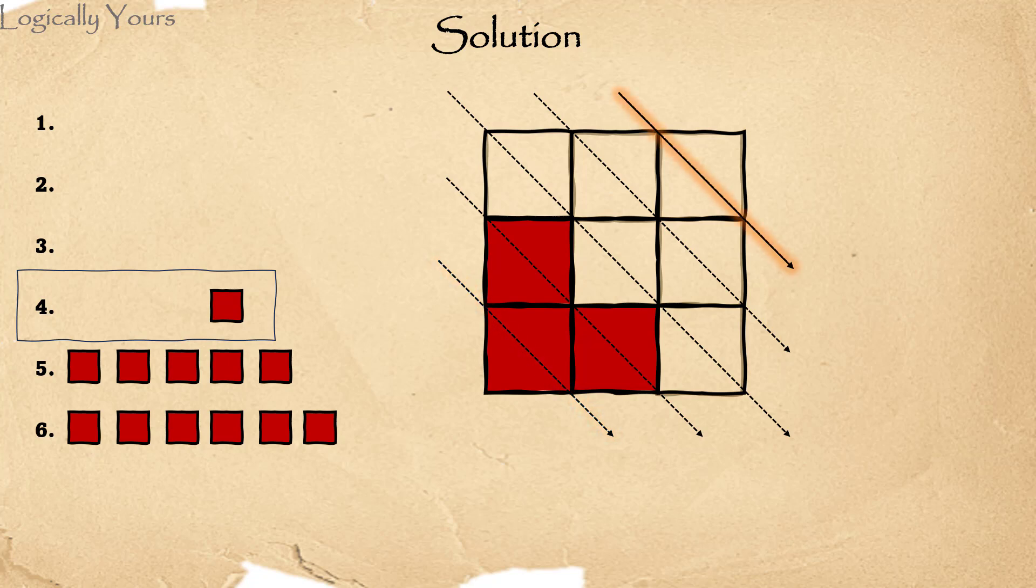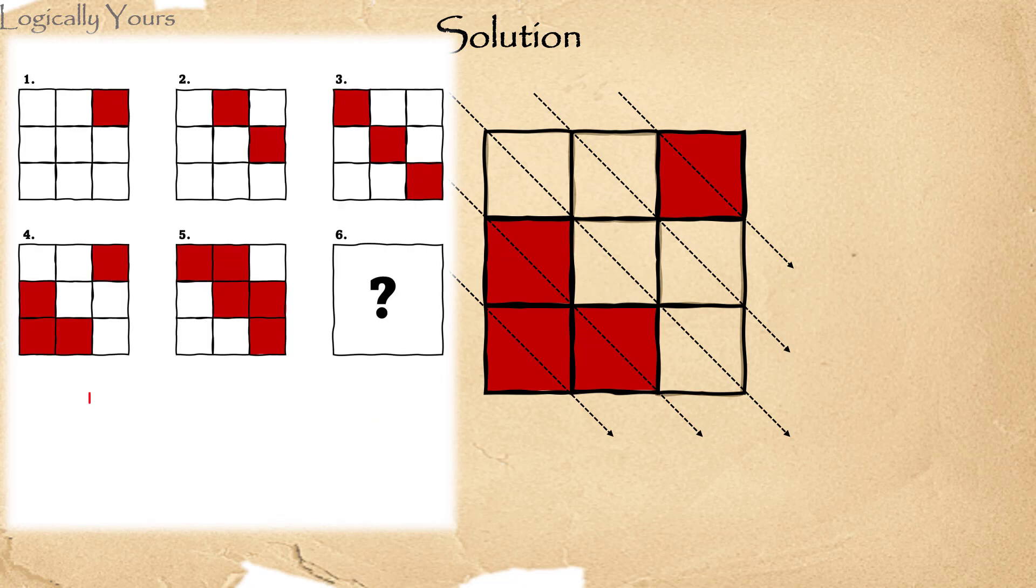This diagonal needs just one square. So the remaining red square would fit at this position. And this is how exactly it was given in the picture number four of the question.